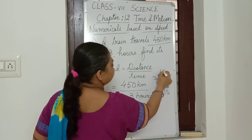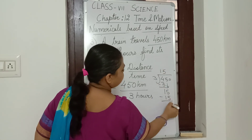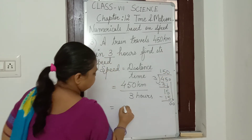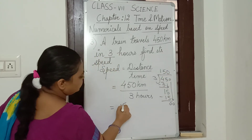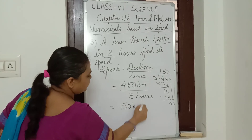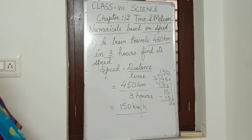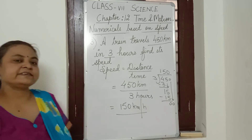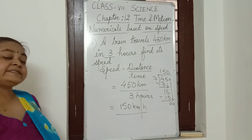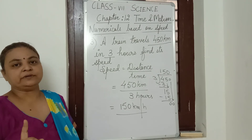3 times 150 gives us 450, so you get 150 kilometers per hour. That means the train is traveling at a speed of 150 kilometer per hour — it is covering 150 kilometers in one hour.